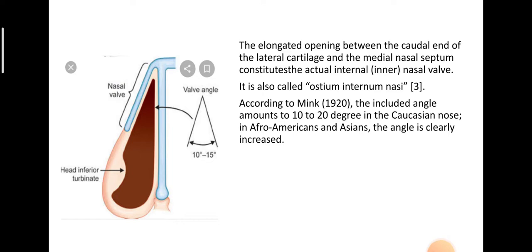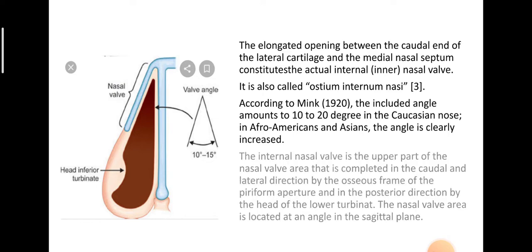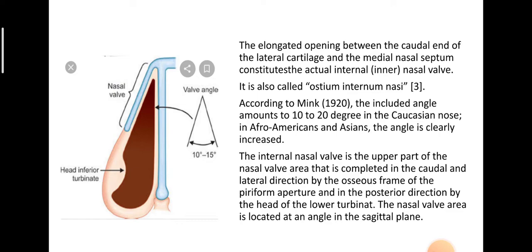According to Mink, the included angle is about 20 degrees in the Caucasian nose. In African Americans and Asians, the angle is clearly increased. The internal nasal valve is the upper part of the nasal valve area, completed in the caudal and lateral direction by the osseous frame of the piriform aperture and in the posterior direction by the head of the inferior turbinate. The nasal valve area is located at an angle in the sagittal plane.